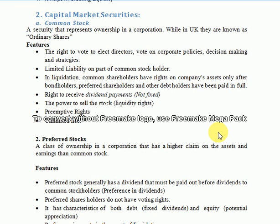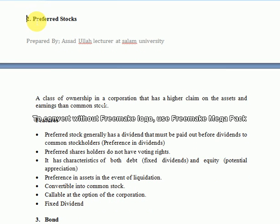Our next topic is preferred stock. Preferred stock is a class of ownership in a corporation that has a higher claim on assets and earnings than common stockholders — that is why it is called preferred or preference stock. These stocks are issued by corporations in which preferred stockholders have a higher claim on assets and earnings than common stockholders. Preferred stockholders have higher claim to dividends or asset distributions than common stockholders.